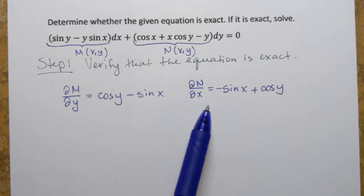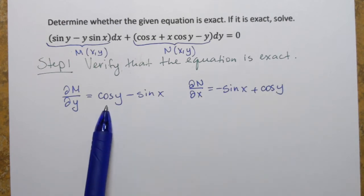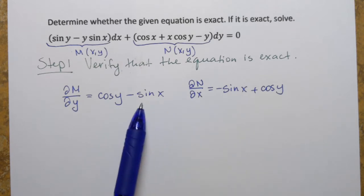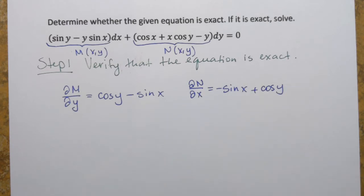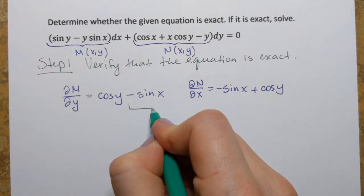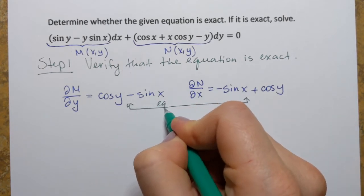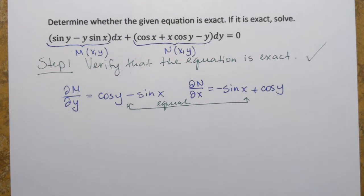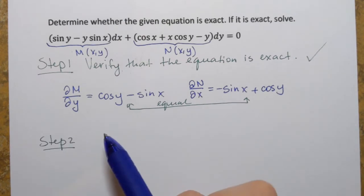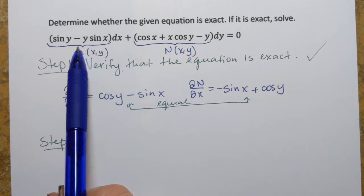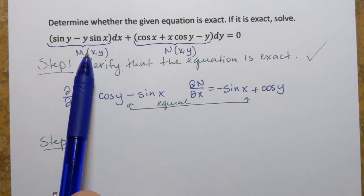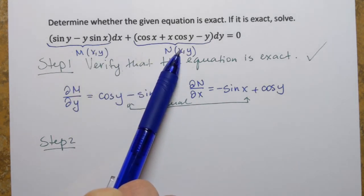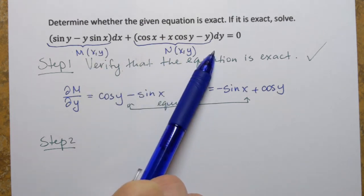Comparing the results: yes, they are the same — cosine of y plus cosine, and negative sine of x — just in different order. They are equal, which means we are looking at an exact differential equation. The exact differential equation has the property that both M of xy and N of xy are partial derivatives of the same function f, and that function f is the solution to this equation. Our goal is to find it.